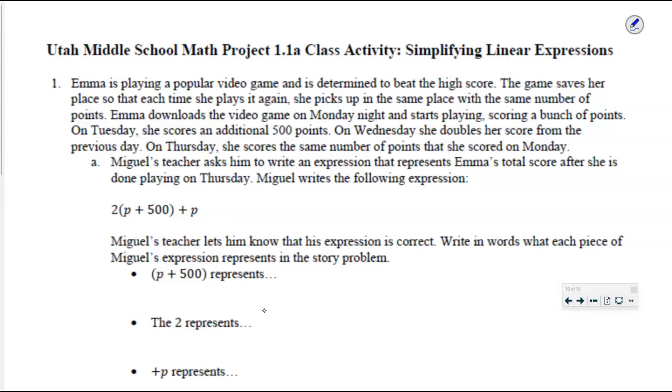Emma is playing a popular video game and she's determined to beat the high score. The game saves her place so each time she plays again she picks up in the same place with the same number of points. Emma downloads the game on Monday night and she starts playing, she scores a bunch of points. Tuesday she scores an additional 500 points. Wednesday she plays enough that she doubles her score from the previous day.